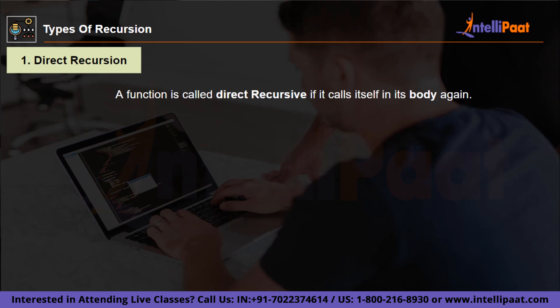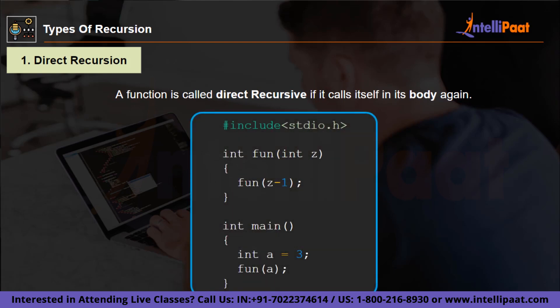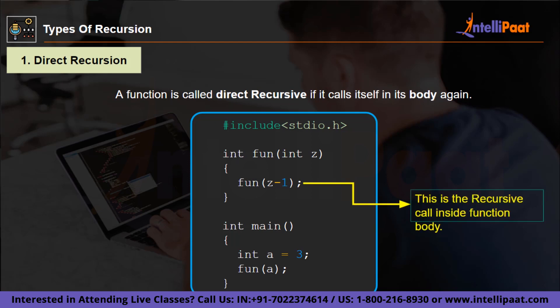Now let's move on to types of recursion. First, we have direct recursion. It is referred to as direct recursion when a function calls itself, causing a one-step recursive call. As you can see in this example, we have a function called 'fun' with parameter int z. We are calling the function within itself, given the parameter z-1. In the main function, we are calling the fun function again. The part where we call fun with parameter z-1 is the recursive call inside the function body.